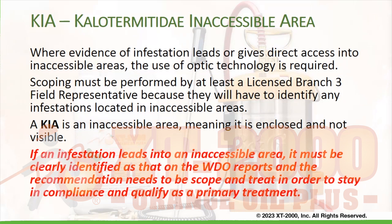A KIA is an inaccessible area — meaning it is enclosed and not visible. If an infestation leads into an inaccessible area, it must be clearly identified as that on the WDL reports, and the recommendation needs to be scoped and treat in order to stay in compliance and qualify as a primary treatment.